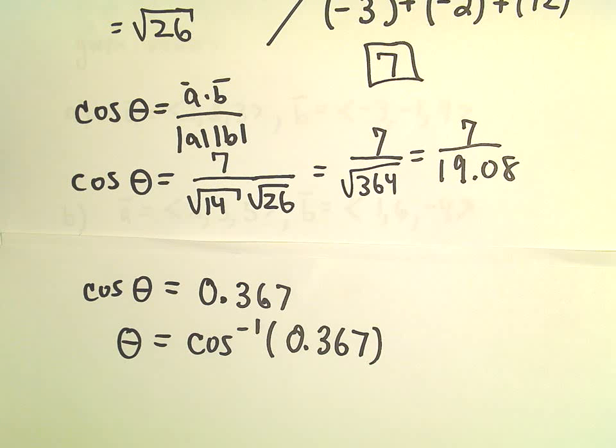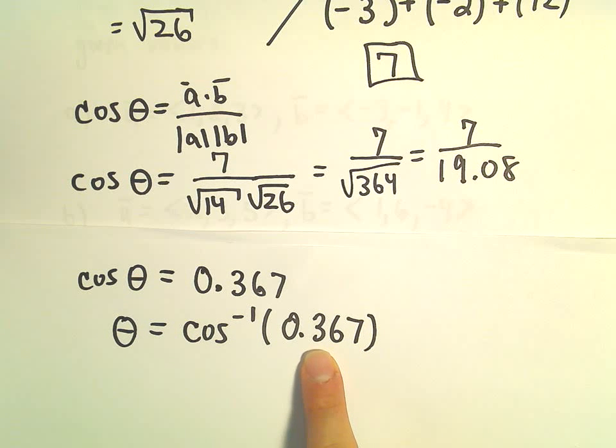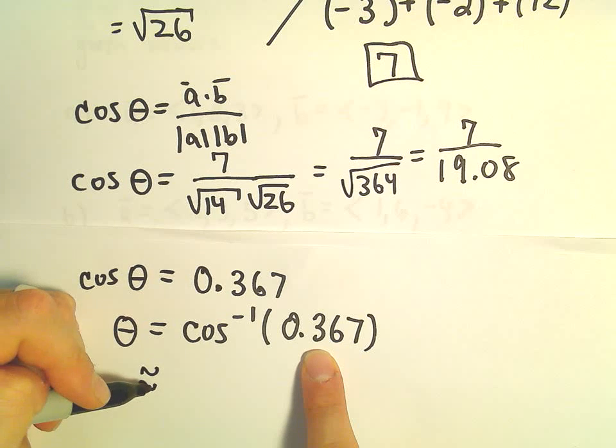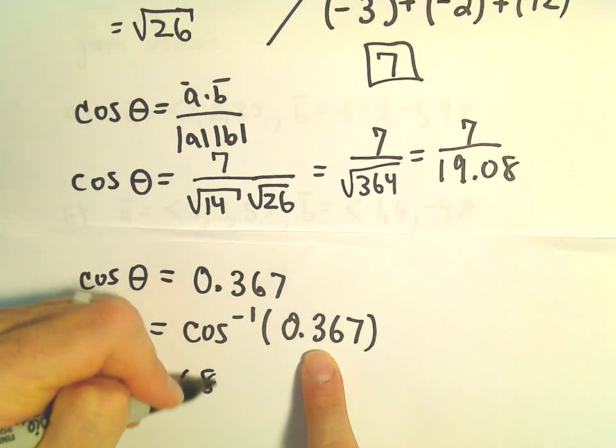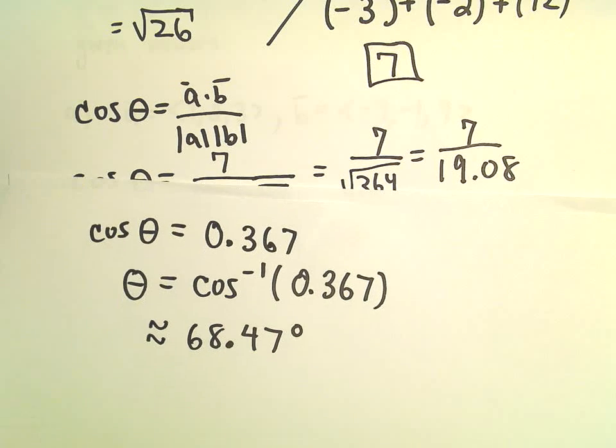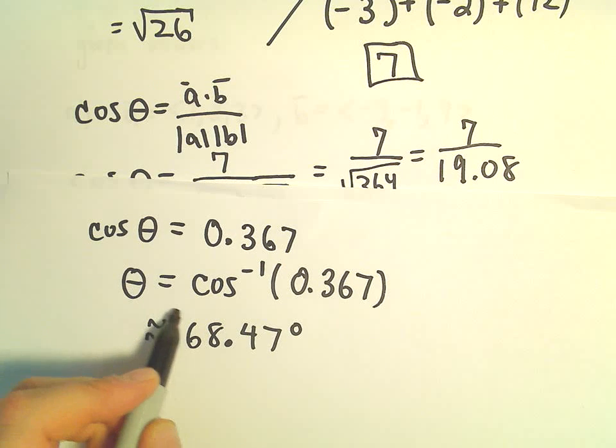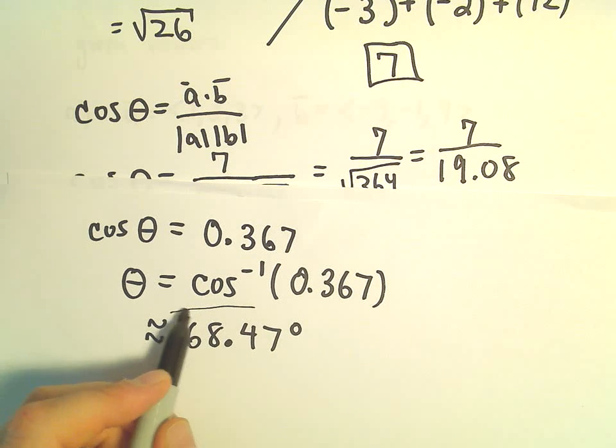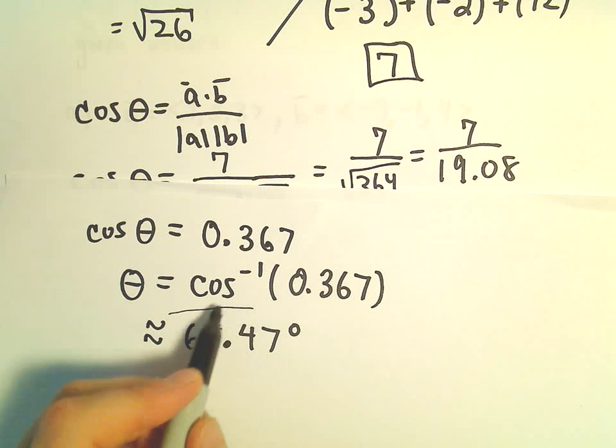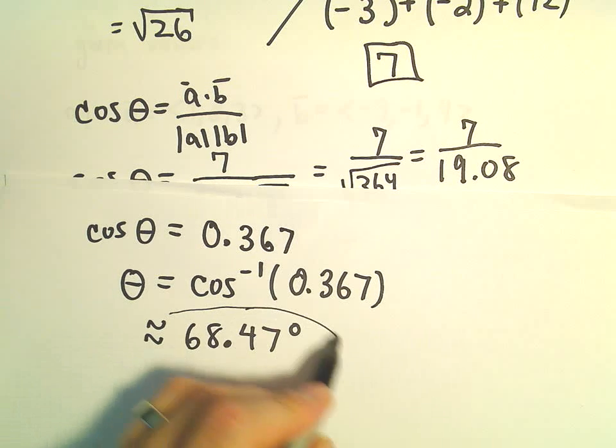So we'll have to do the inverse cosine of 0.367. I am getting arc cosine of 0.367 to be roughly equal to 68.47 degrees. So, somewhere between 68 and 69 degrees. Our angle is going to be somewhere between 68 and 69 degrees.